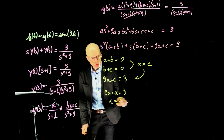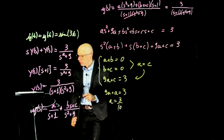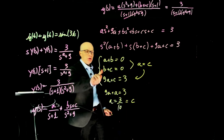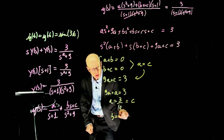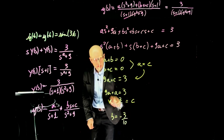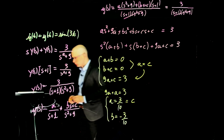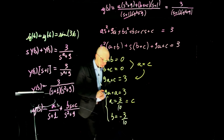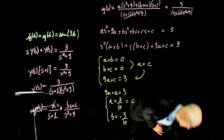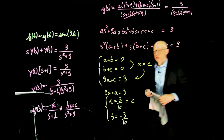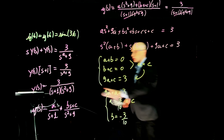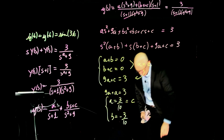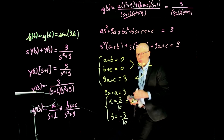From those first two equations combined, we find that A equals C. Substituting into 9A+C = 3 gives 10A = 3, so A equals 3/10, which is the same as C. And B can be taken from either equation: B equals negative 3/10. Those are the coefficients A, B, and C.